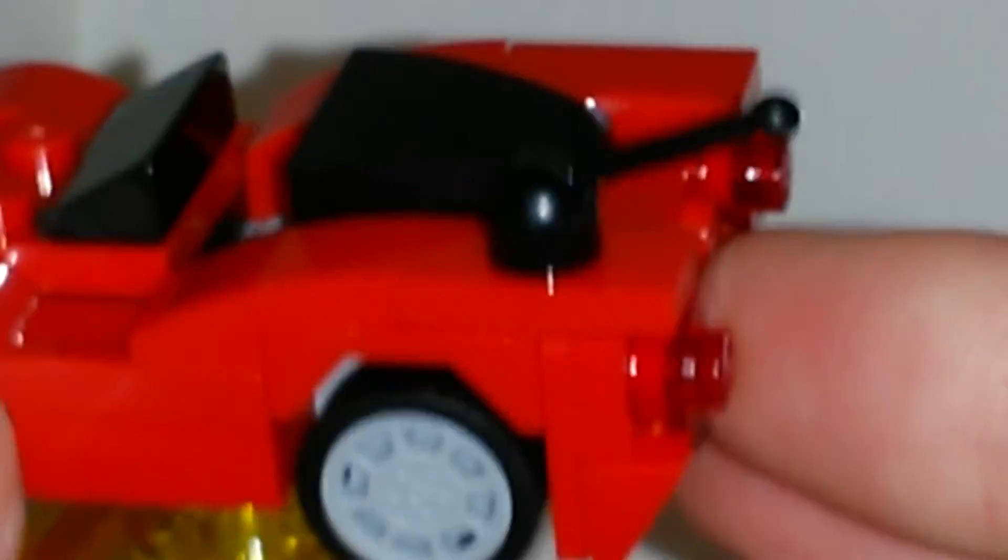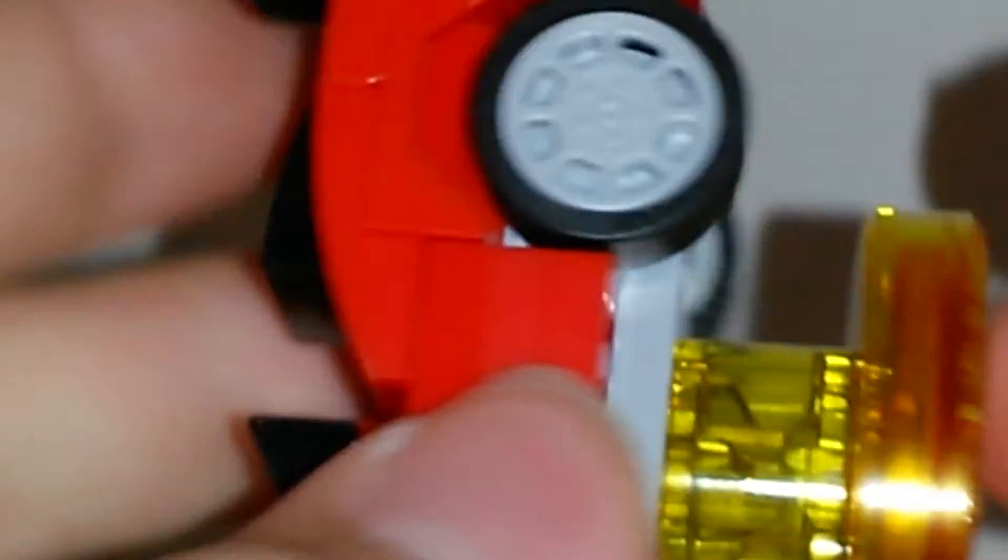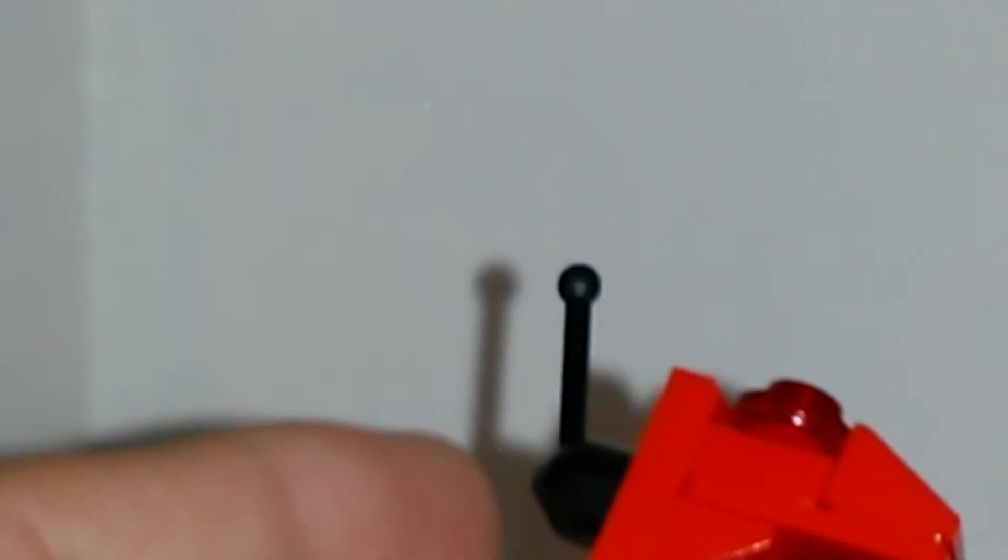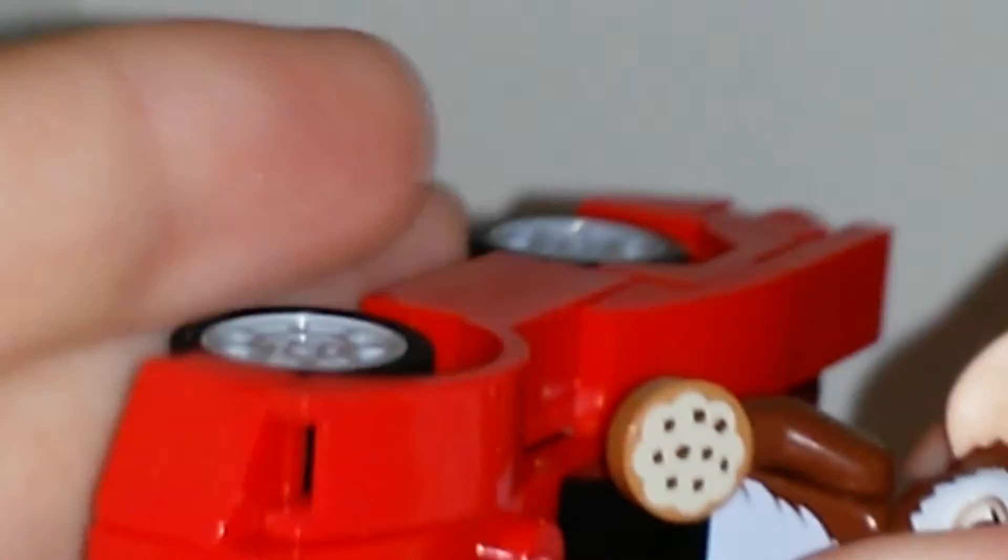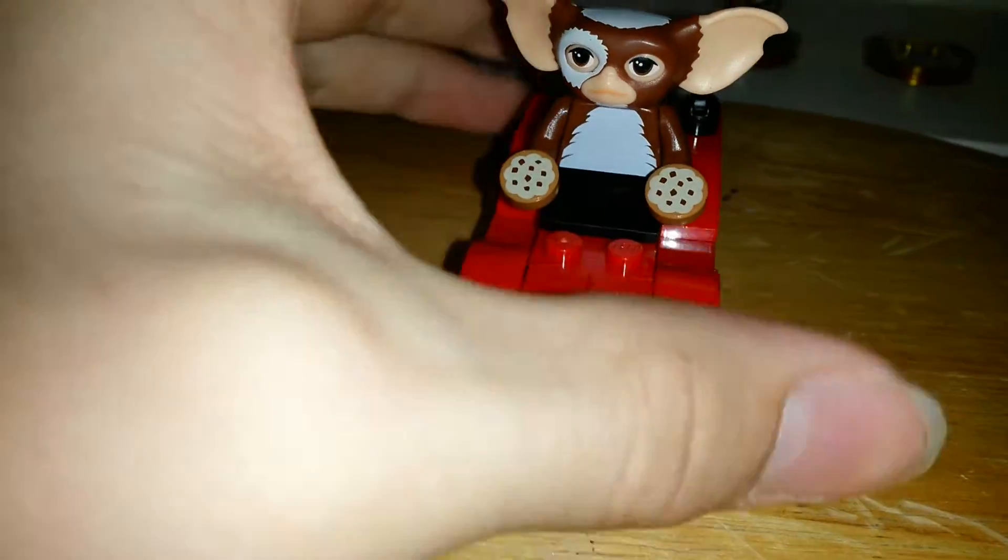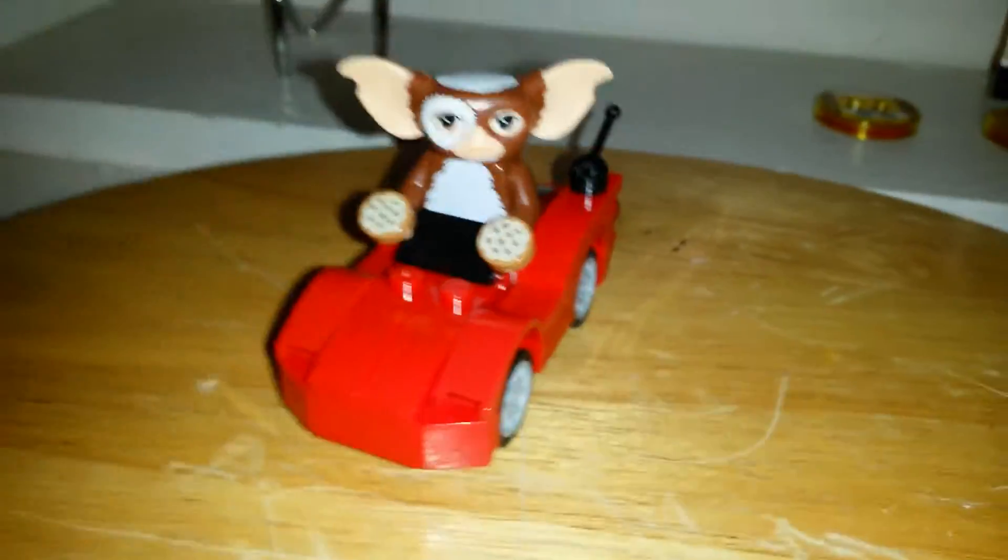And I think one of the cooler pieces is the little Gizmo car that you do get. I like this because you can actually just take this off. You can actually take Gizmo and you can stick him in this car. And of course it rolls. I like to have them like this, and then I like to have Stripe like that.